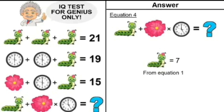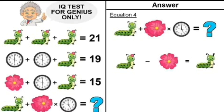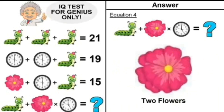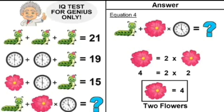If we remove the flower from the caterpillar with 5 sphericals, its value is 5. So a caterpillar with 5 sphericals equals 5, and a caterpillar with 6 sphericals equals 6. Moving on to figure number 2, it shows 2 flowers. From equation 3, a flower equals 2, so 2 flowers equals 4.